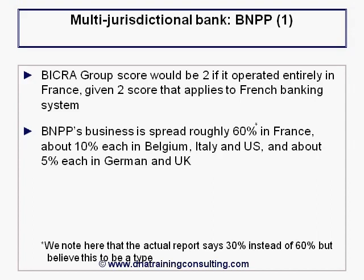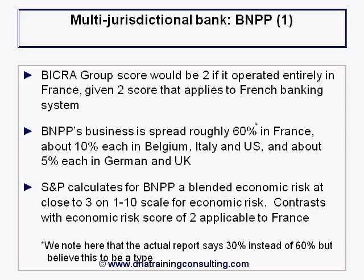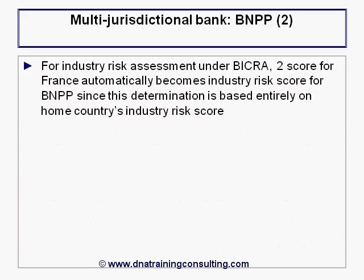We note that the actual report says 30% for France instead of 60%, but we believe this to be a typo. S&P calculates for BNPP a blended economic risk of close to 3 on the 1-to-10 scale, contrasting with the economic risk score of 2 applicable to France. When it comes to industry risk assessment under BICRA, the 2 score for France automatically becomes the industry risk score for BNPP, since this determination is based entirely on the home country's industry risk score.